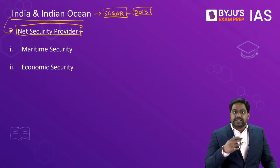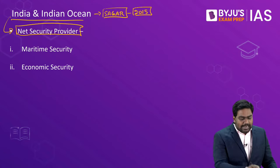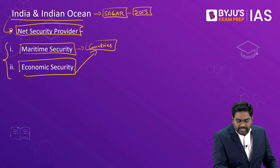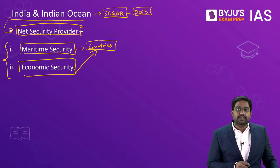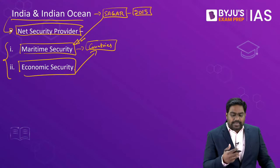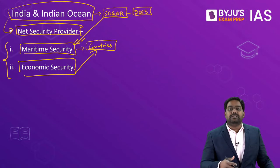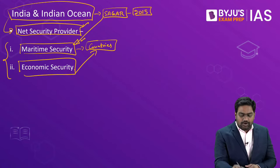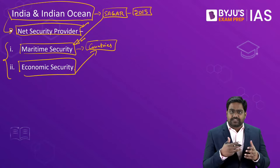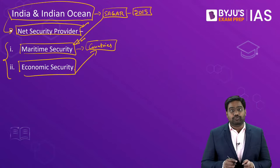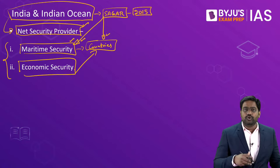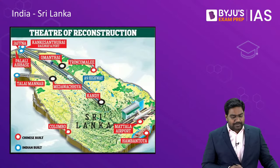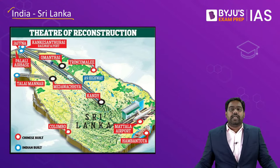This is India's vision and ambition — to emerge as the net security provider and guarantee not just maritime security but also economic security and growth to all Indian Ocean countries, especially the small island nations. Countries like Maldives, Mauritius, Seychelles, the East African countries, and Sri Lanka should perceive India as the net security provider — the first country they seek help from when facing challenges or threats. To realize this vision, the SAGAR doctrine has been launched and can already be seen in operation across the Indian Ocean.